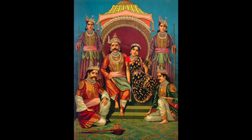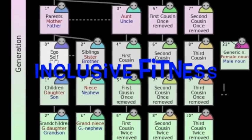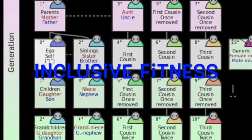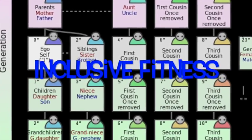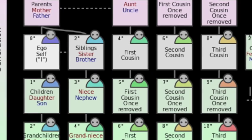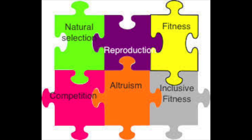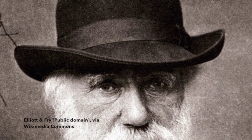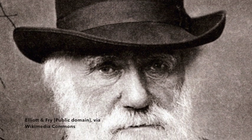This idea, later called inclusive fitness, was synthesized by a scientist named William Hamilton, and we will talk about his ideas a bit later. So let's discuss for a minute why it was such a big deal to Darwin that someone might make an observation that would falsify his theory.